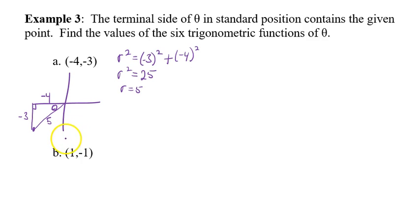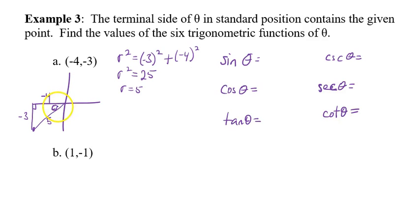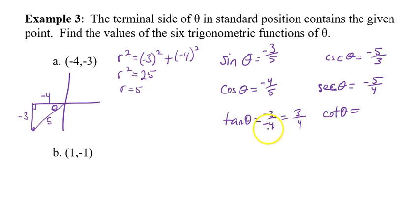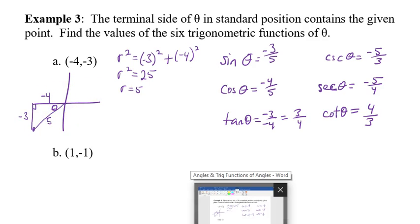From the triangle with theta at the origin: sine = opposite/hypotenuse = −3/5, cosecant = −5/3; cosine = adjacent/hypotenuse = −4/5, secant = −5/4; tangent = opposite/adjacent = (−3)/(−4) = 3/4 (two negatives make a positive), and cotangent = 4/3.